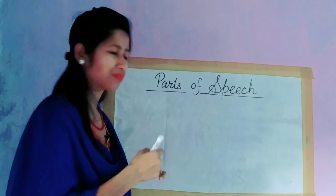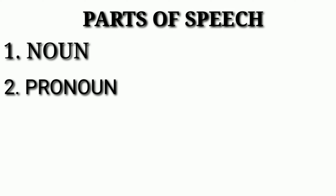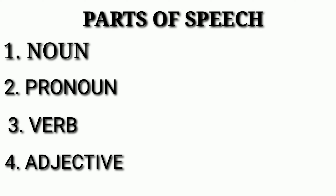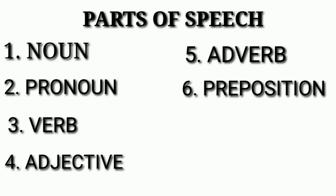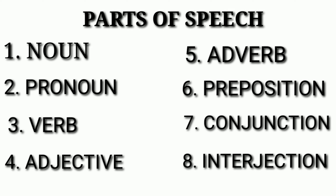Let's see which they are. Number 1: Noun. 2: Pronoun. 3: Verb. 4: Adjective. 5: Adverb. 6: Preposition. 7: Conjunction. 8: Interjection. Let's talk about each of them one by one.